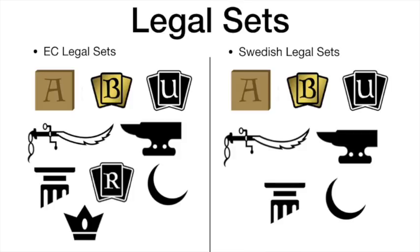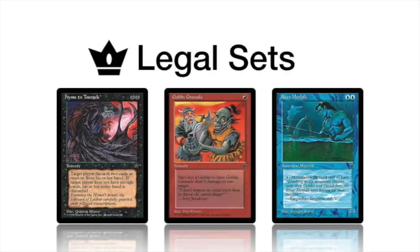The legal sets in EC are Alpha, Beta, Unlimited, Arabian Nights, Antiquities, Legends, Revised, The Dark, and Fallen Empires. In Swedish legal sets there are only two differences: Revised is not legal and Fallen Empires is not legal. This has a huge impact on the actual game because Fallen Empires, even though it's considered one of the weaker sets, has some very strong cards.